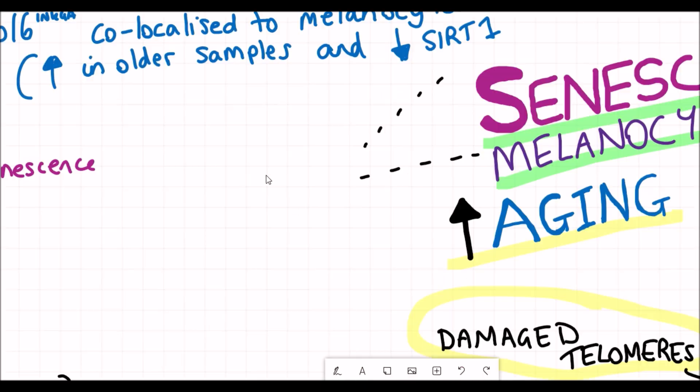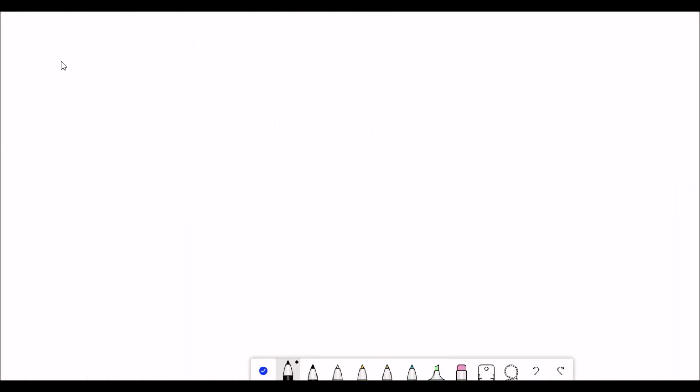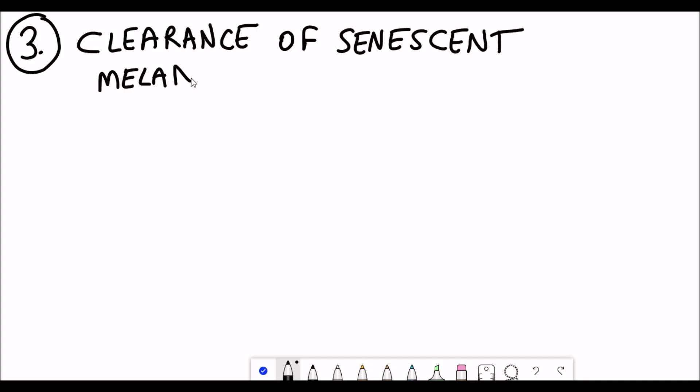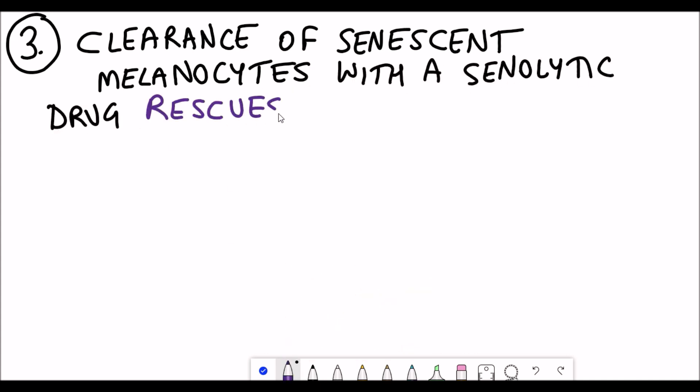The last part of this paper establishes whether clearance of senescent melanocytes could have an impact. What they saw is that through the use of a senolytic drug they could actually rescue epidermal atrophy, which is the thinning of the skin layer, using a 3D human epidermal model.